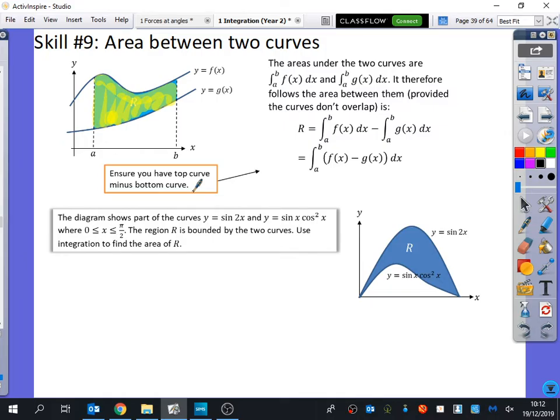The diagram shows part of the curves y equals sin(2x) and y equals sin(x)cos²(x) where x is between 0 and π over 2. The region R is bounded by the two curves. When it says bounded by the two curves, it means those curves are the boundary of the area you're looking for, the outside of it. Use integration to find the area of R. They've luckily told us it's between 0 and π over 2, but it would be pretty quick to find out because clearly you can see it's crossing the y-axis here and they both cross the y-axis at π over 2.